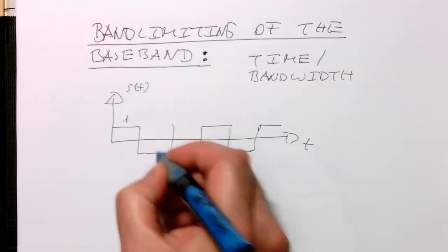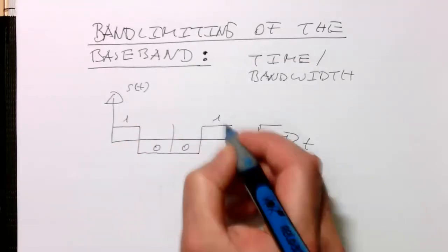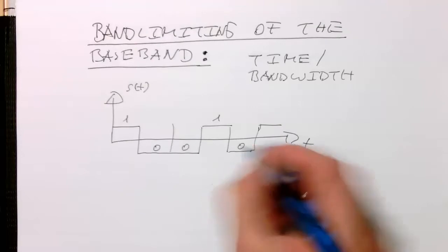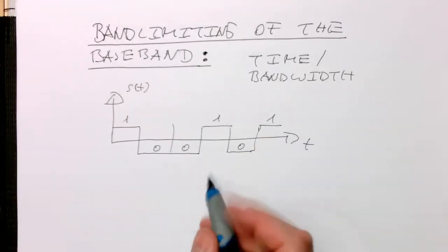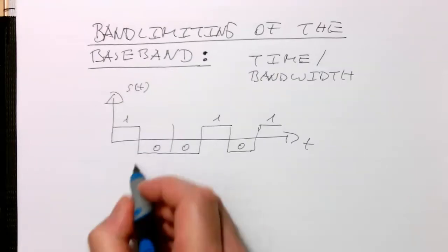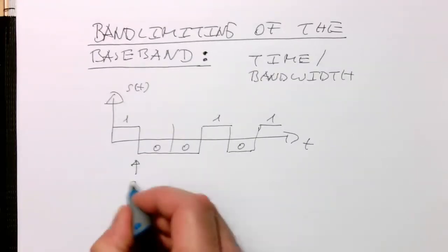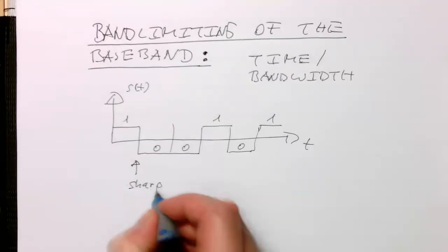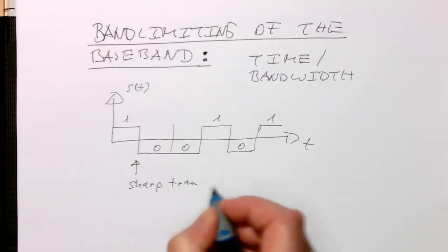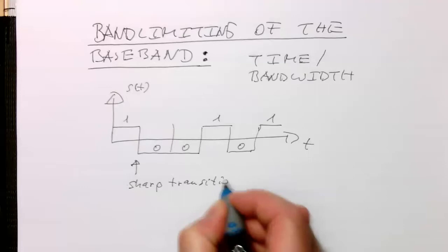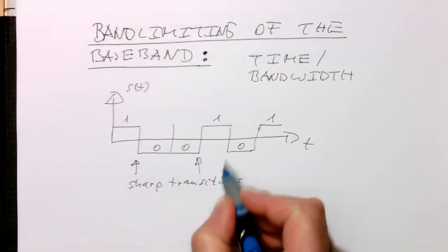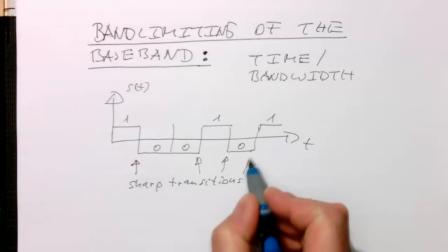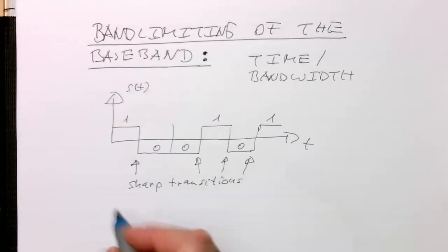This would be a zero, another zero. That's a one. That's a zero. And that's another one. And so here we have these very sharp transitions here. So here and here.